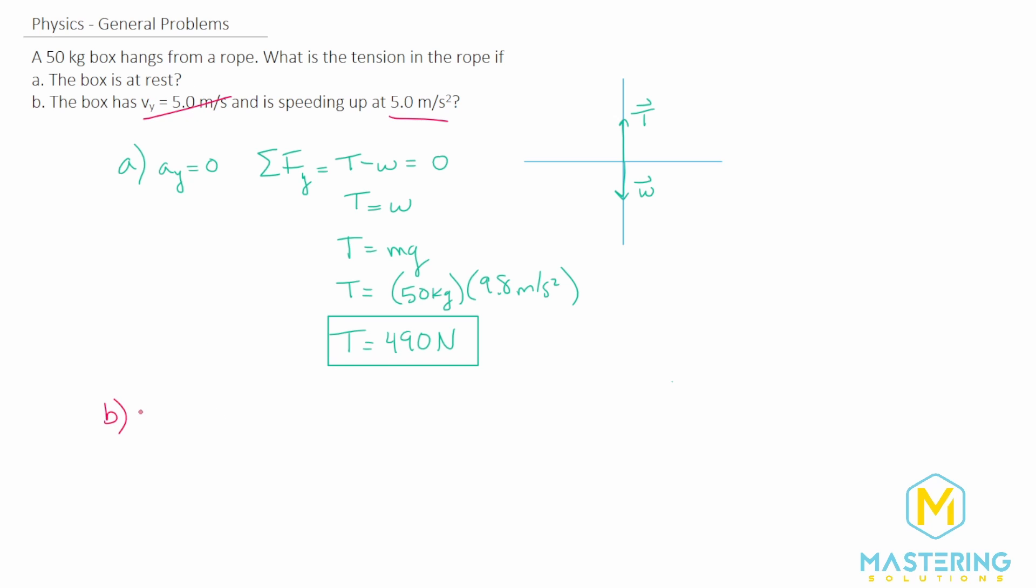So for part B, we'll do the same thing. Acceleration in the y direction now is equal to 5 meters per second squared. So if we sum the forces in the y direction again, it's going to be the same thing as right here. So now when we sum the forces in the y direction, we have tension again, which is positive, minus the weight, but in this case, it'll be equal to ma because we have an acceleration now.